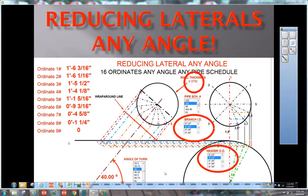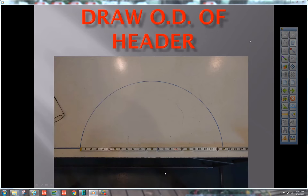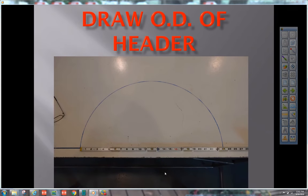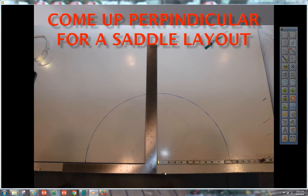When we're all done, we'll have achieved these ordinates right here. We're going to draw the OD of the header, splitting it halfway on a baseline. We're going to come up perpendicular first. Draw a baseline perpendicular to the center of that 24.